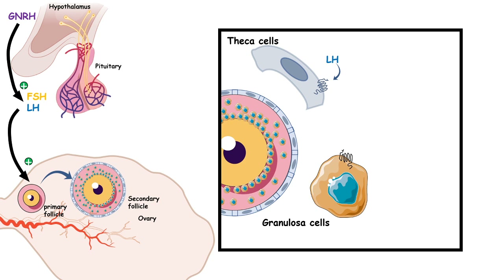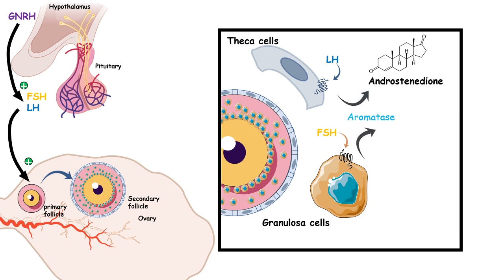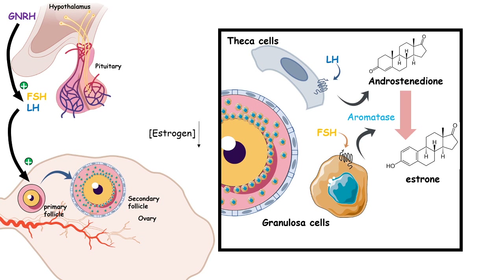LH signaling in the theca cell drives the production of androstenedione, which is an intermediate in the estrogen synthesis pathway. FSH stimulation of the granulosa cell induces the enzyme aromatase, which converts androstenedione to estrone — an estrogen derivative. So granulosa cells and theca cells, in coordination with FSH and LH, together produce estrogen. Initially the level of estrogen is low, and this low estrogen level gives a negative feedback to the hypothalamus, which is why GnRH, FSH, and LH levels also fall — explaining the initial dip in FSH and LH seen in the curve.